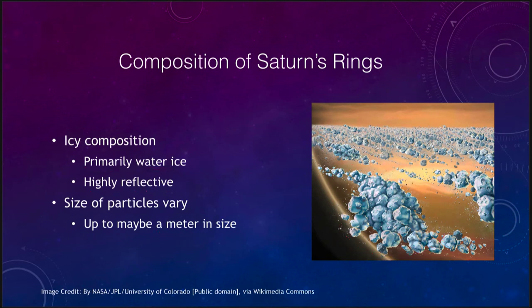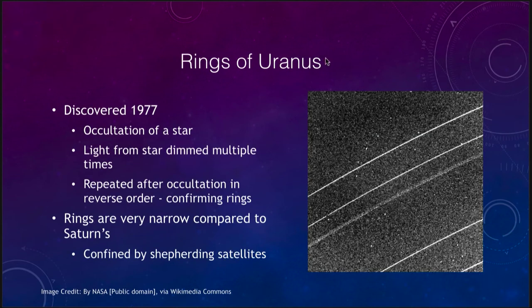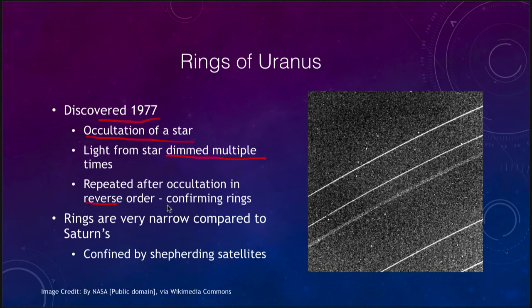Uranus's rings were discovered in 1977, a couple of years before Jupiter's were discovered, though hundreds of years after the rings of Saturn were known. They were discovered during the occultation of a star — Uranus was going to pass in front of a star, and before the planet passed in front, we saw the light dim multiple times. This repeated after the occultation in the reverse order, confirming that the rings exist.